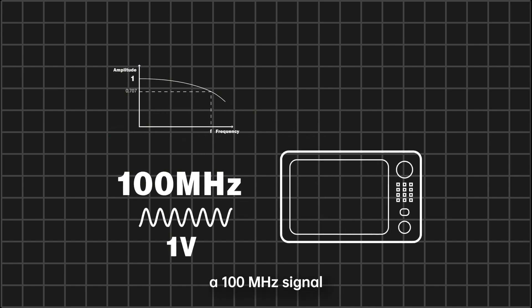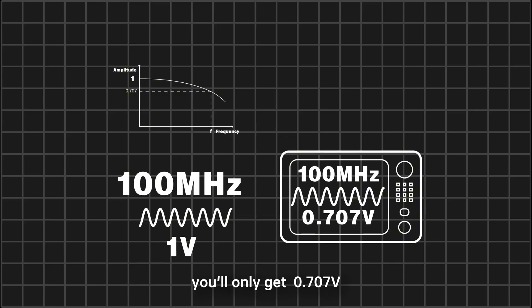So, if you measure a 100 MHz signal with a 100 MHz oscilloscope, you'll only get 0.707 volt.